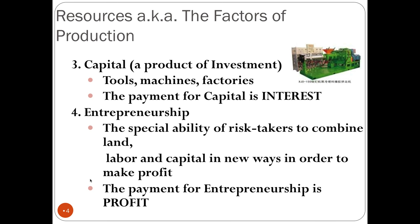A good way to remember these four factors of production is the acronym CELL — C-E-L-L. It stands for Capital, Entrepreneurship, Land, and Labor. CELL: Capital, Entrepreneurship, Land, and Labor.